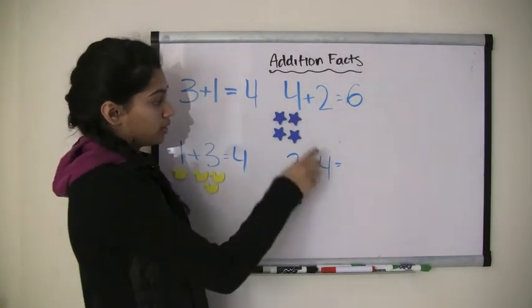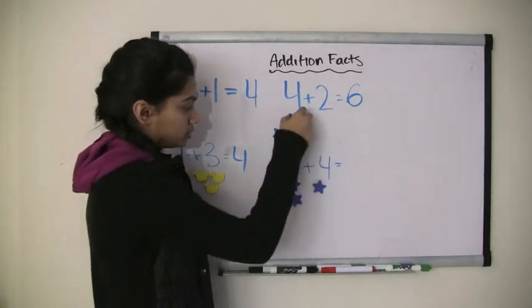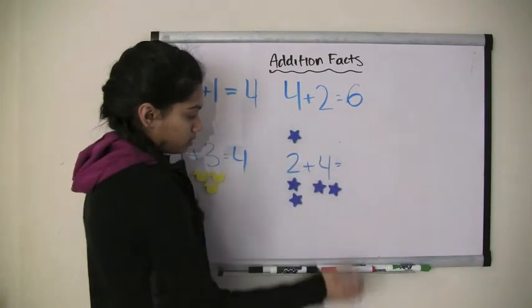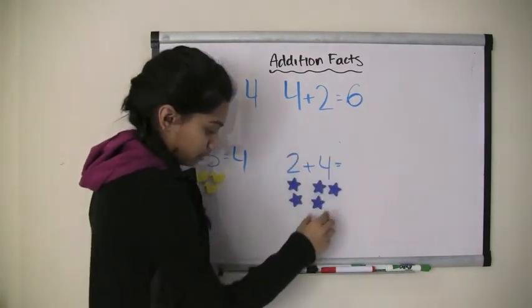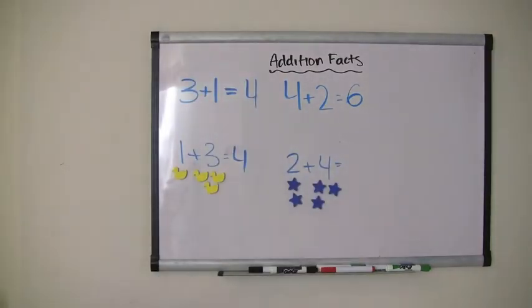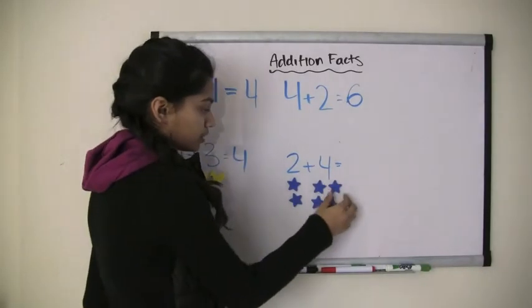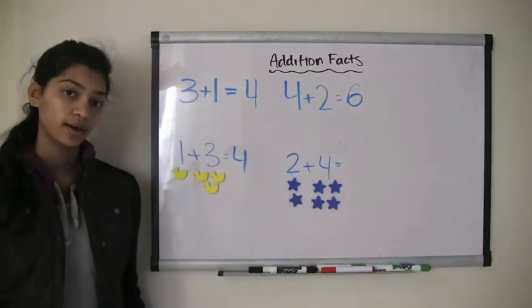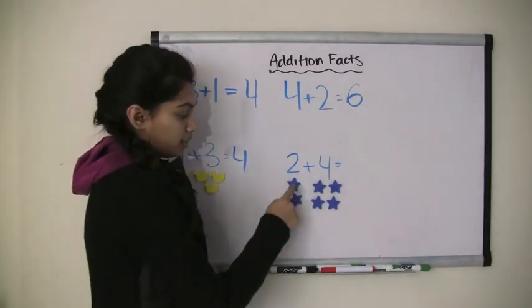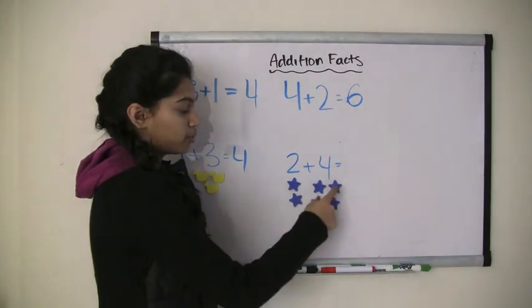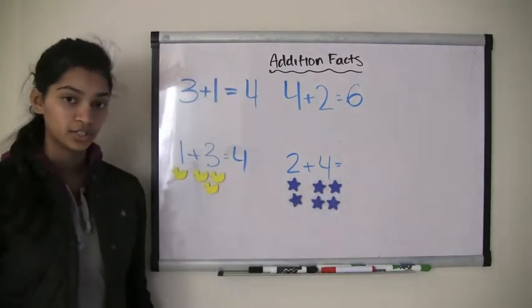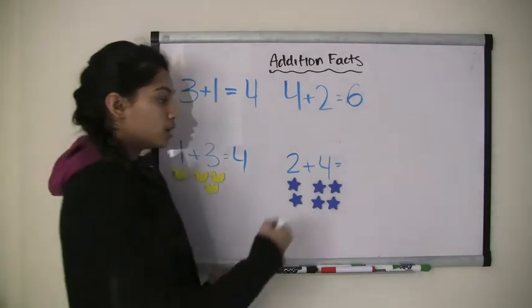And I want to add 4 more. 1, 2, 3, 4. So now, how many stars do I have in total? I have 1, 2, 3, 4, 5, 6 stars in total. So 2 plus 4 also equals 6.